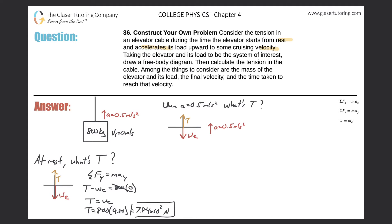Setting up our force equation: the sum of forces in the y-direction equals mass times acceleration. The forces in y give us positive tension minus the weight of the elevator, equal to the mass of 800 kilograms times the acceleration of 0.5 meters per second squared.